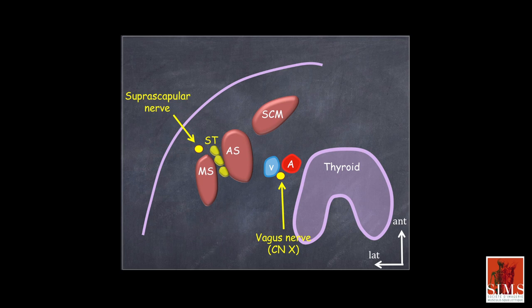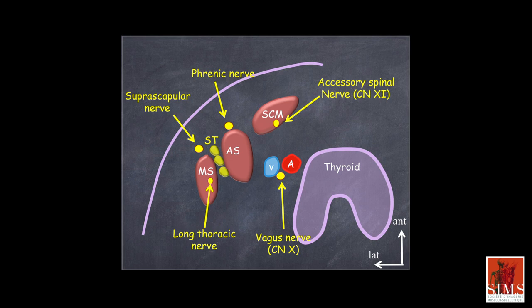Here is an example of the vagus nerve, CN10, between the carotid and the jugular vein, which is very easy to see. Here is the phrenic nerve, with a very clear landmark, the anterior part of the anterior scalene. Here is the long thoracic nerve, which pierces the middle scalene. And finally, the accessory spinal nerve, CN11, which innervates the sternocleidomastoid muscle and the trapezius, and pierces the sternocleidomastoid.